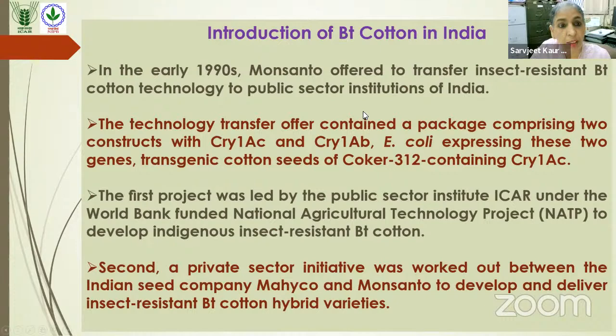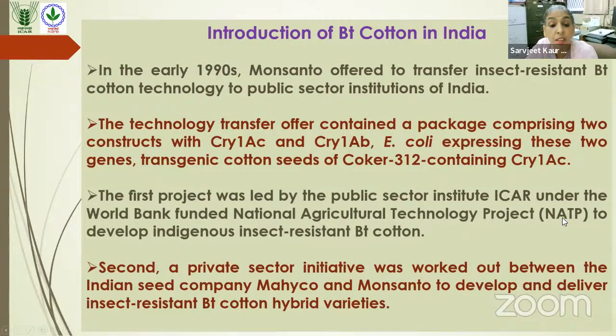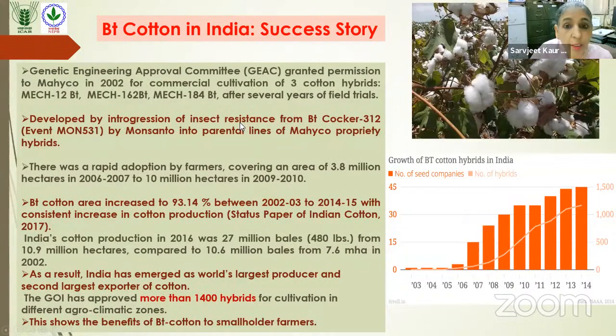How did Bt cotton introduction in India happen? In the 1990s, Monsanto offered to transfer its technology to Indian public sector institutions. This technology was in two forms: cloned Cry1Ac and Cry1Ab genes in E. coli expressing these proteins, and also transgenic cotton seeds of the Coker variety containing these genes. Both public sector (National Agricultural Technology Project, NATP, implemented at our institute) and private sector (MAHYCO, a Monsanto subsidiary) were involved. I was also part of this project and we developed insect-resistant Bt cotton.